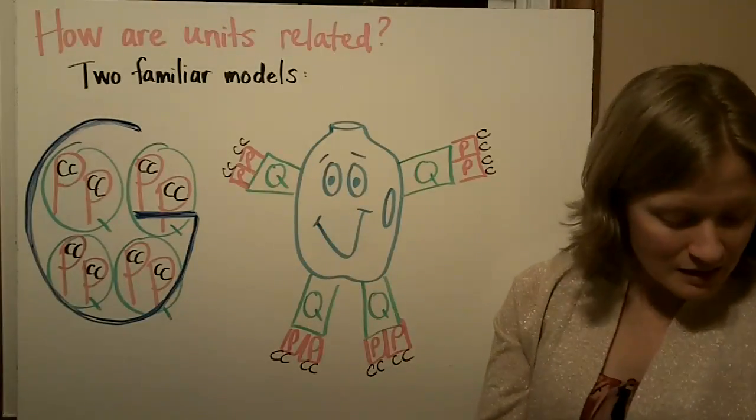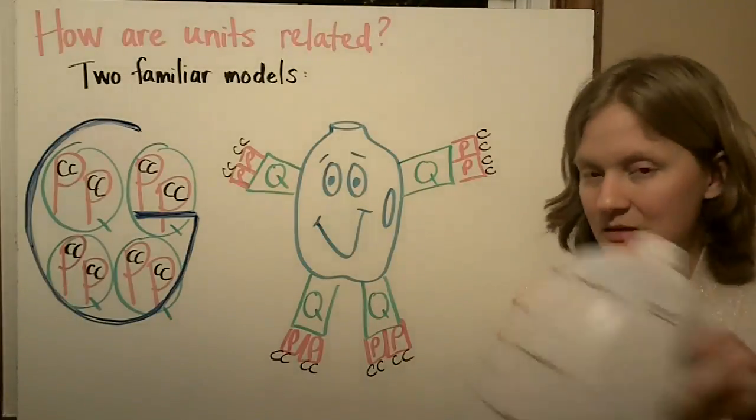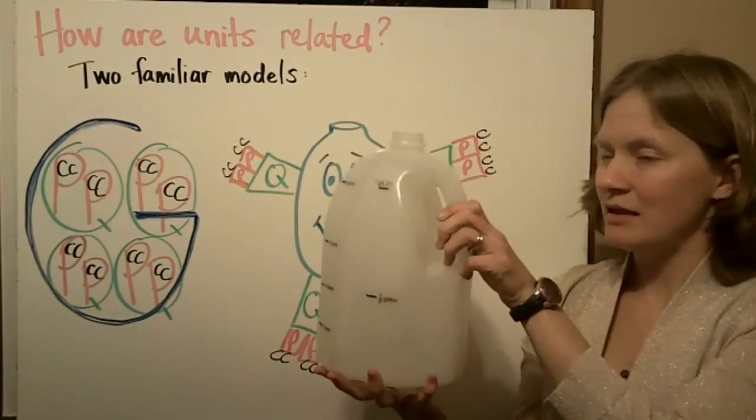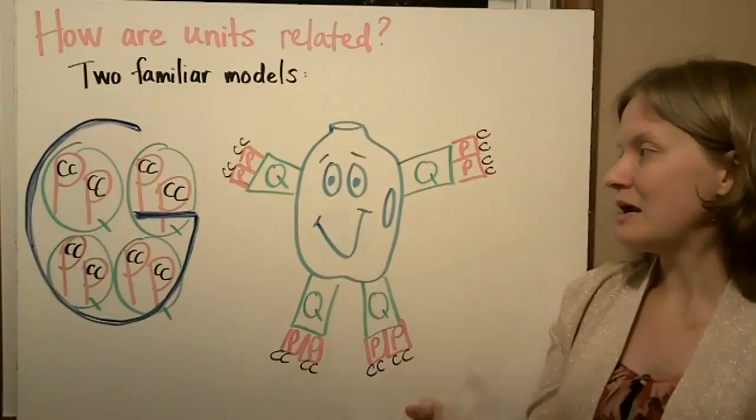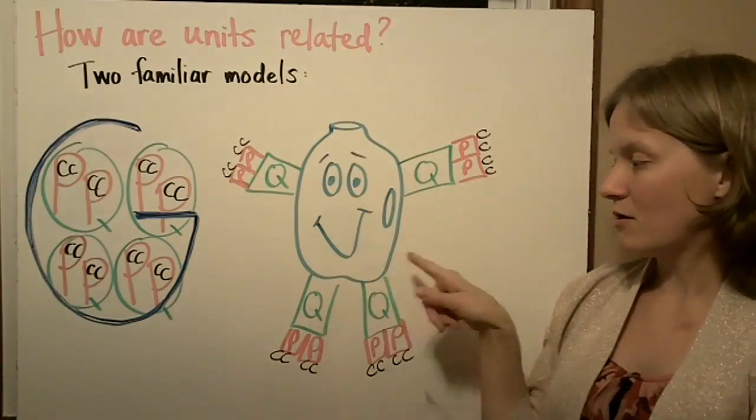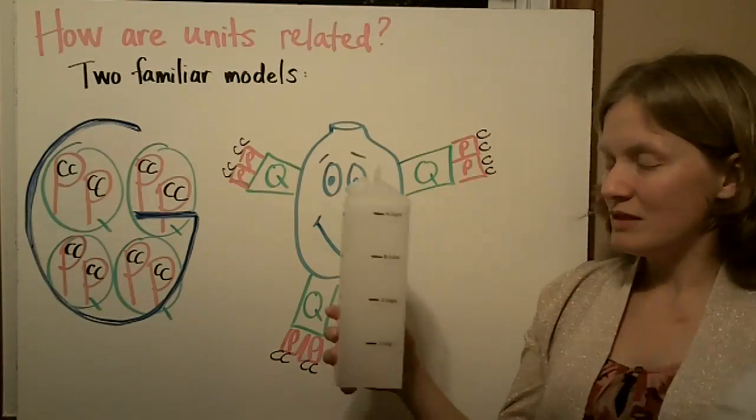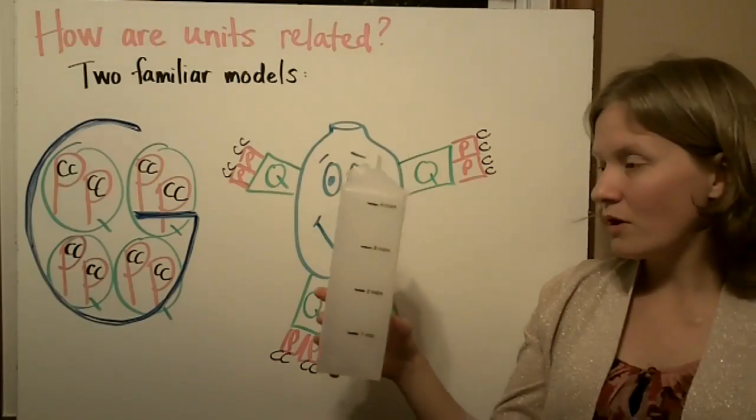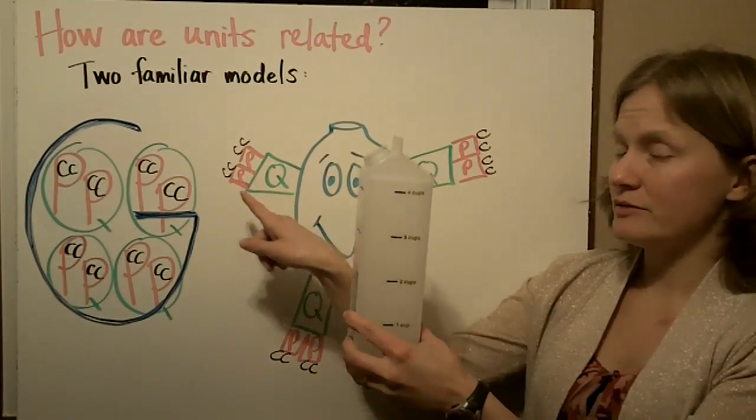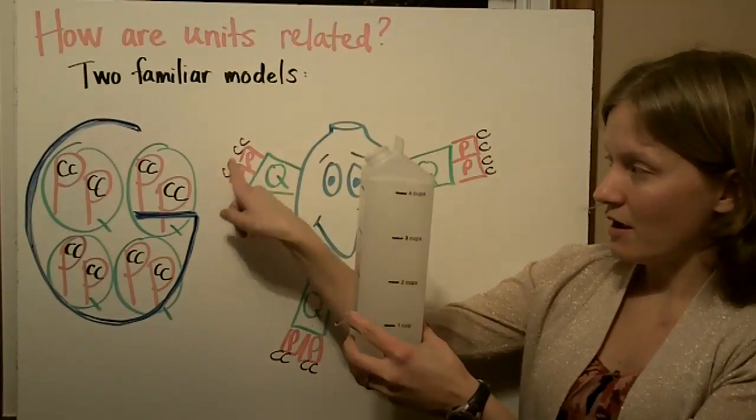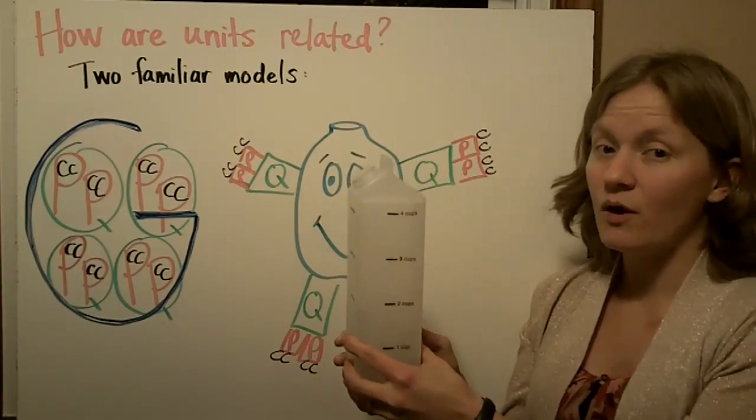The way you would read this is that gallon man, made out of a gallon, equals four quarts because he has four green arms and legs. One quart equals two pints, and four cups equals one quart.